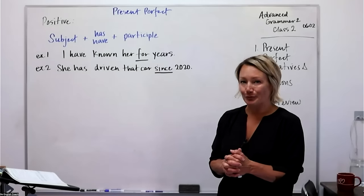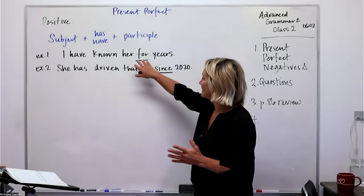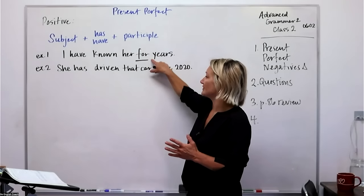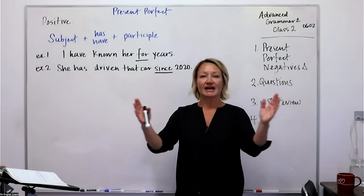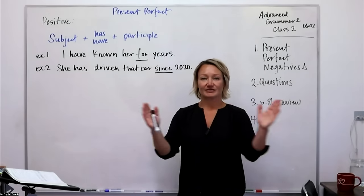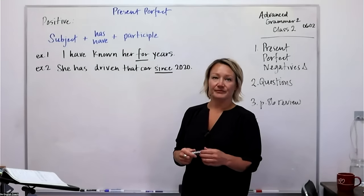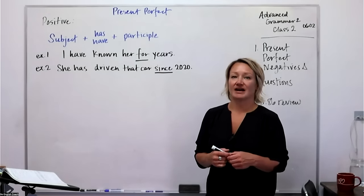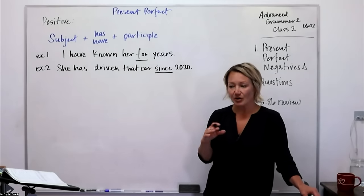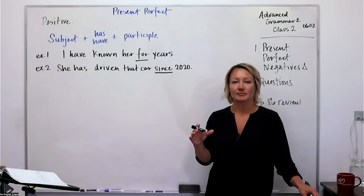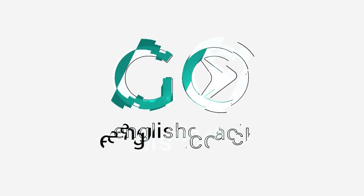In our class yesterday we discussed the differences between when we use 'for' and when we use 'since.' We use 'for' in the present perfect to discuss a period of time, and 'since' refers to one specific point in time. So you can say 'I've known her since I was young,' which also uses the past tense in that clause.